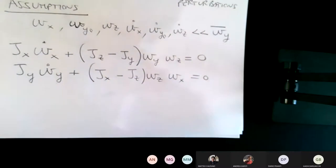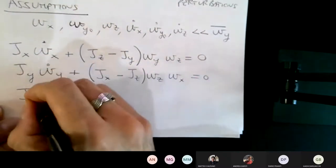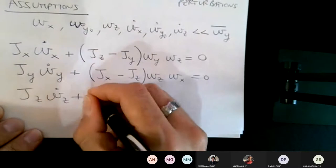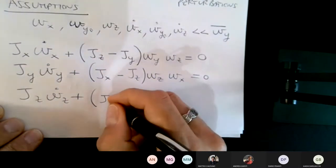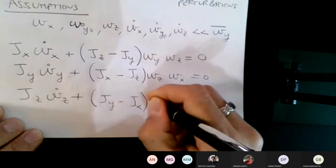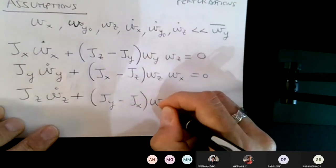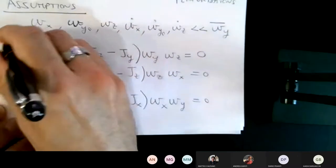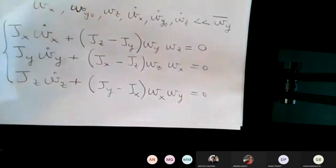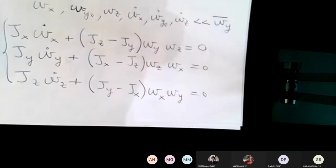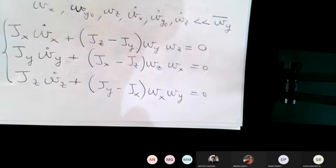If you have your slides handy you can check if these are correct. I think here we have J_x, and probably J_y minus J_x, something like that — omega_x omega_y equals zero. So these are the three equations of motion of a rigid body projected on the principal axes of inertia. I'm going to check them because I don't trust myself with memory. We saw them yesterday, correct?